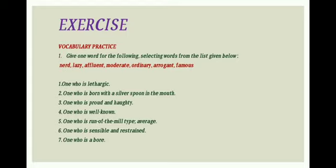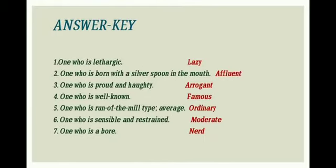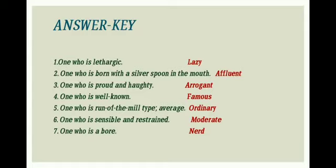I hope you have done the exercise. Let's check the answers. One who is lethargic is 'lazy.' One who is born with a silver spoon in the mouth is 'affluent' — it means rich. One who is proud and haughty is known as 'arrogant.' One who is well known means 'famous.' One who is run of the mill type or average means 'ordinary.' One who is sensible and restrained is 'moderate.' One who is bored — jo bahut boring hove — is 'nerd,' meaning a very boring person.